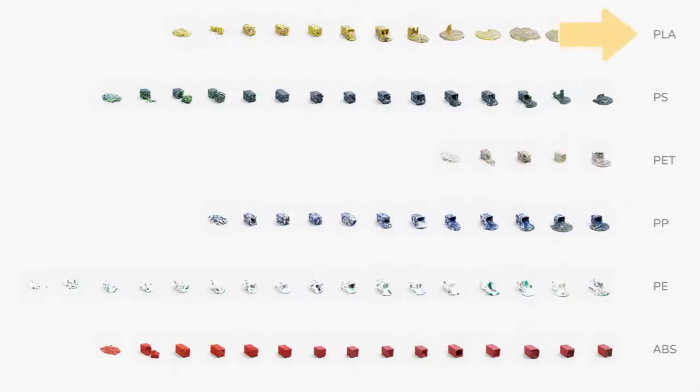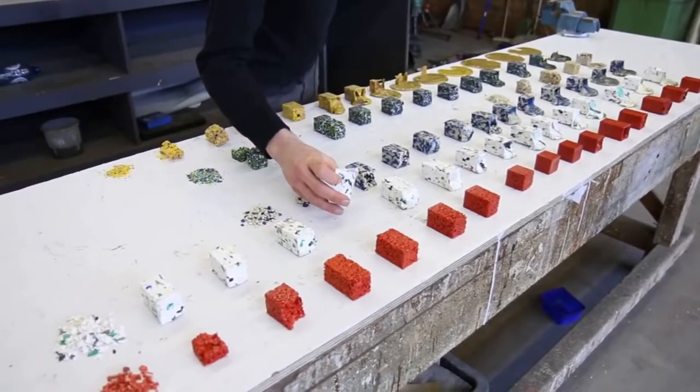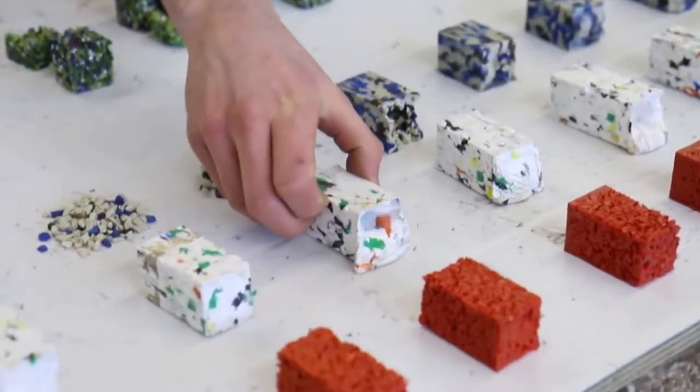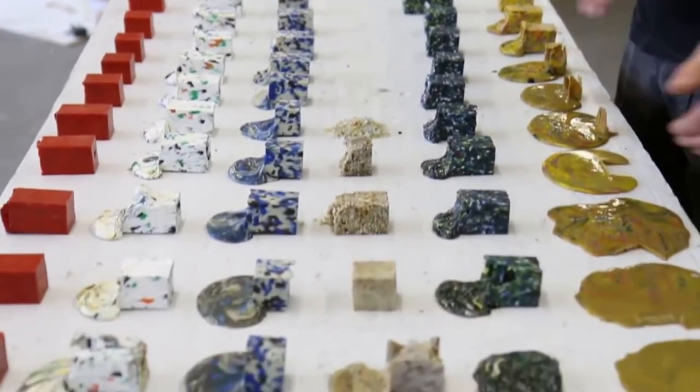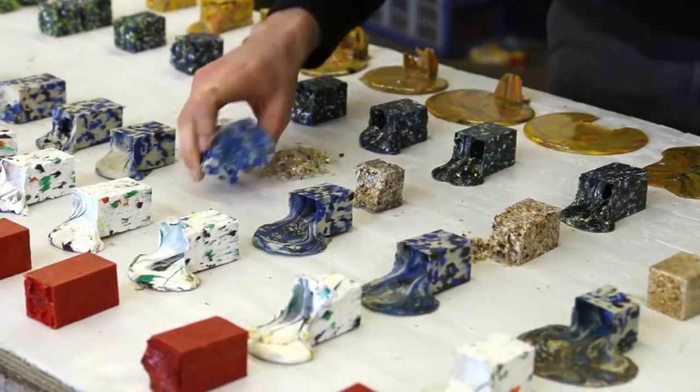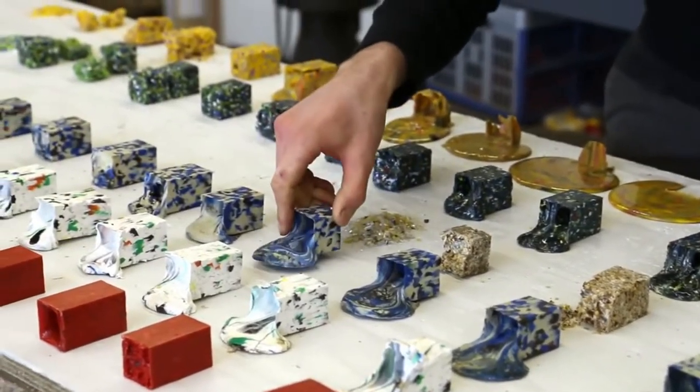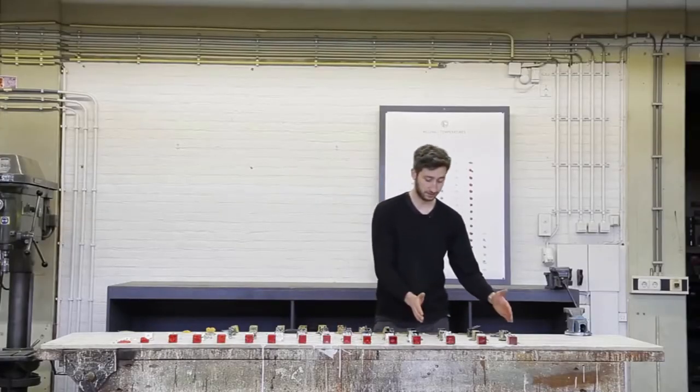So each row is a different type of plastic. And here it's 120 degrees and here it's 280. And as you can see some plastic starts to melt at lower temperature, while others need much higher temperature to melt. And also some materials have a very long melting zone, where others are quite crucial.